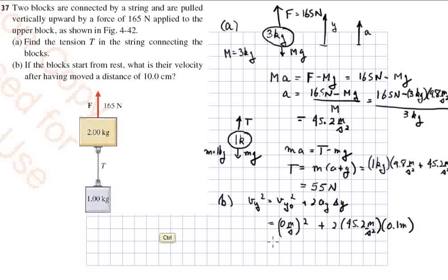And so that turns out to be 9.04 meters squared per second squared, meters squared per second squared. And Vy is the square root of that. In other words, it's 3.01.